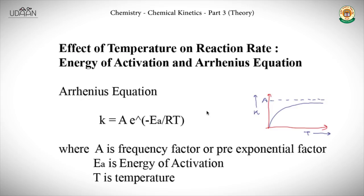Now let's study the effect of temperature on the rate of reaction — specifically how the rate constant K varies as a function of temperature. The Arrhenius equation describes this dependence: K equals A times e raised to the power minus Ea divided by RT, where K is the specific rate constant, A is the frequency factor or pre-exponential factor, Ea is the energy of activation, T is the temperature, and R is the universal gas constant.